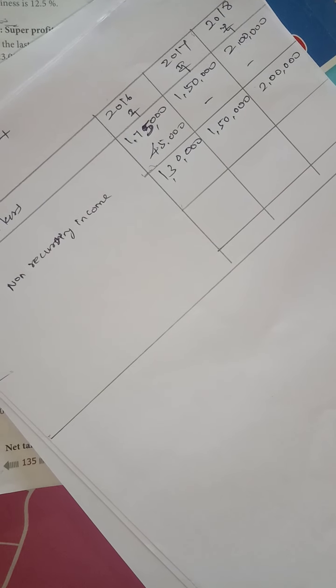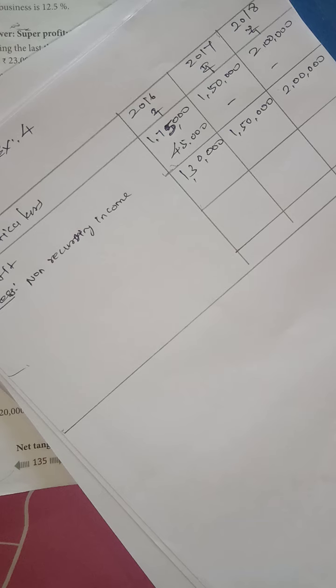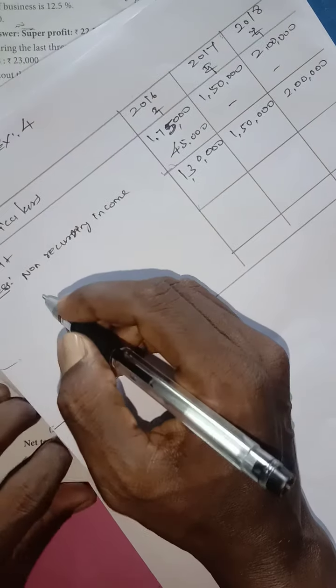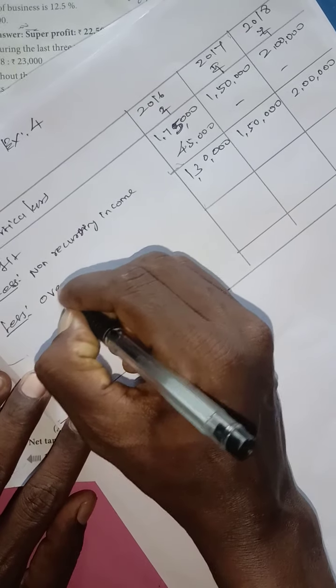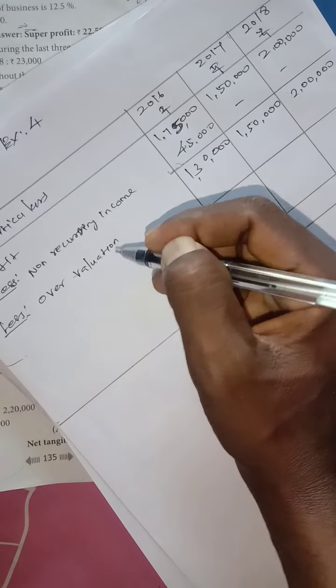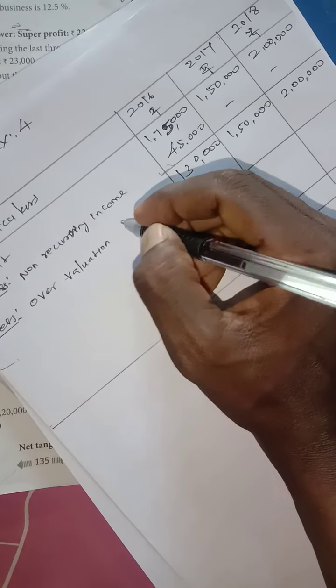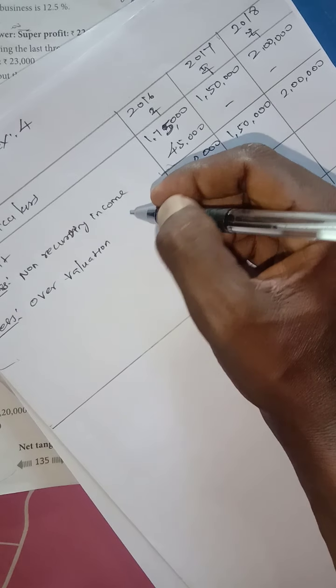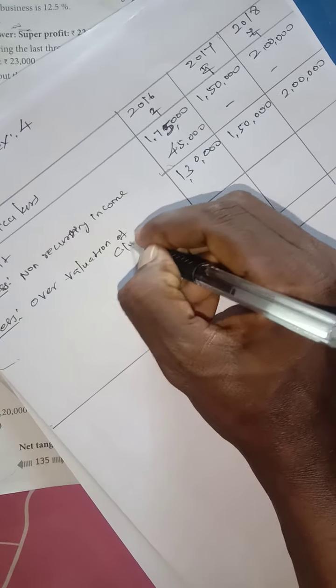In this case, the overvalued value, the closing stock was overvalued. So this is the closing stock adjustment.